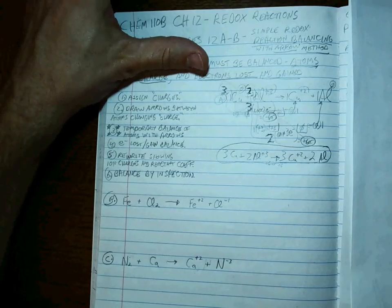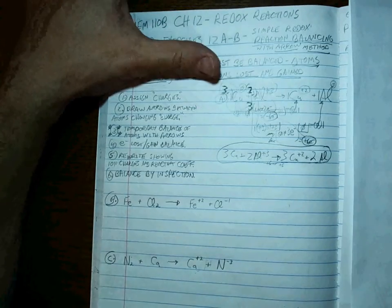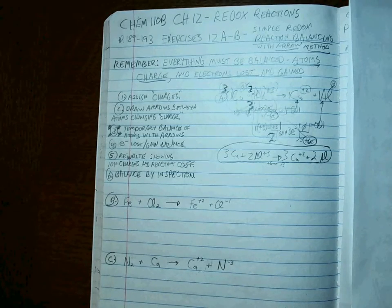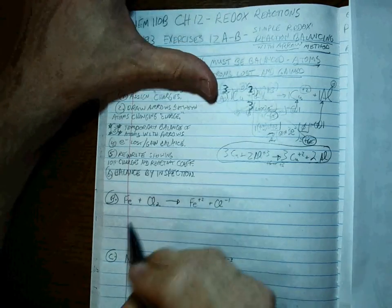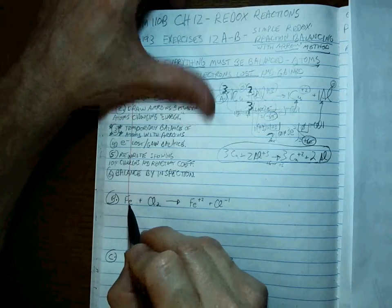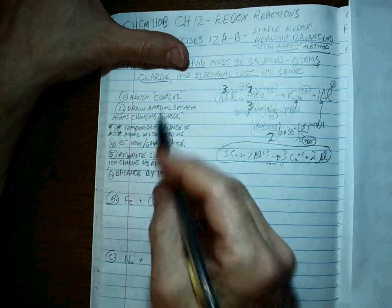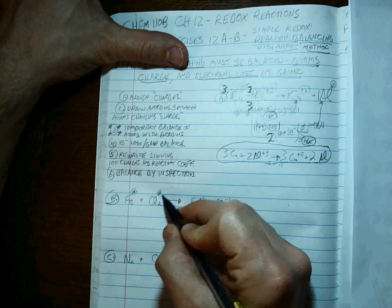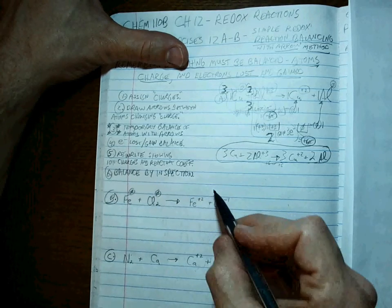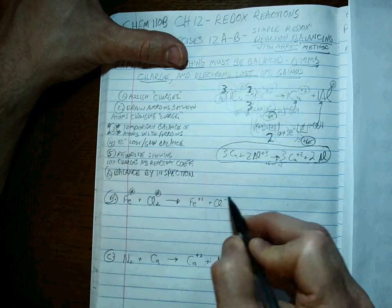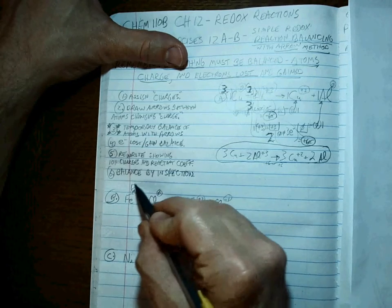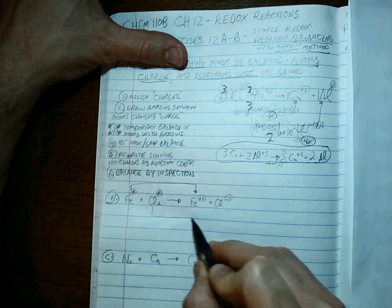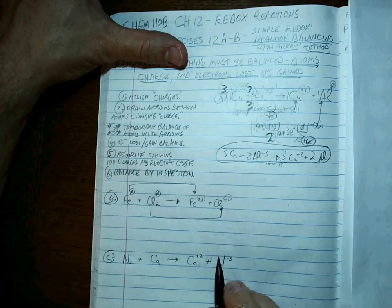The next two problems are important because of step three — temporary balance. For Problem B: Fe is zero, Cl₂ as a compound is zero, Fe²⁺ is plus two, Cl⁻ is minus one. The iron turns into iron ions, and the chlorines turn into chloride ions.